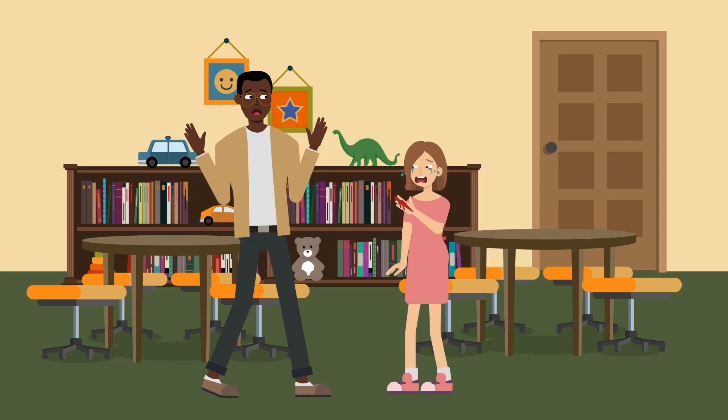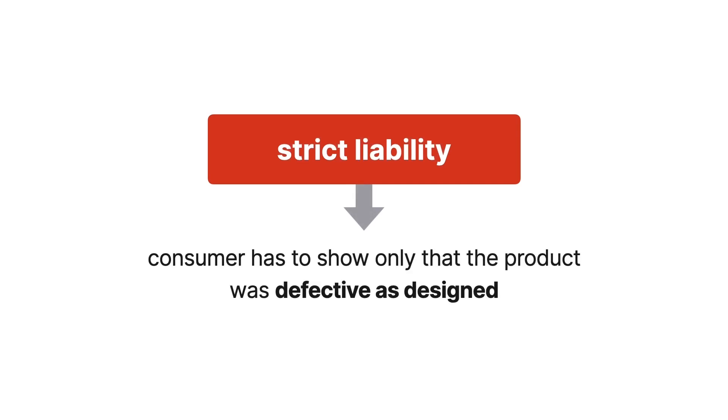A user injured by a product that was defectively designed may recover in strict liability from the product's manufacturer. Strict liability means that the consumer has to show only that the product was defective as designed, not that the manufacturer was negligent or otherwise at fault.